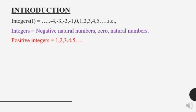Positive integers = 1, 2, 3, 4, 5, etc. Negative integers = ... -5, -4, -3, -2, -1.